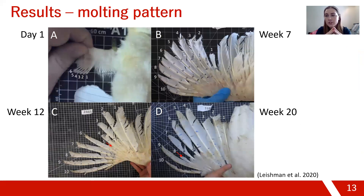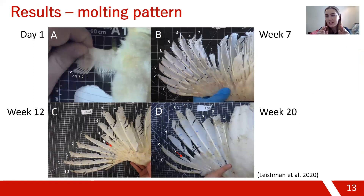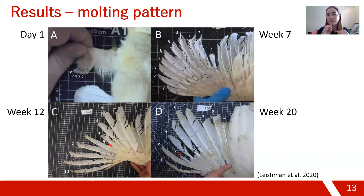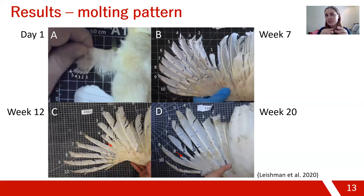Moving into results: Figure A shows a wing image at day one — right out of hatch — where primary feathers 1 to 6 are already present, while 7, 8, 9, and 10 are not yet there. Images B, C, and D at weeks 7, 12, and 20 respectively all have one thing in common: one feather is noticeably shorter than all the others. This illustrates what is called a descending molting pattern.